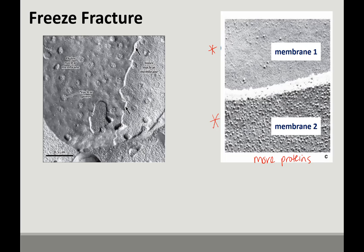Some pretty cool science has been done using freeze fracture. For example, here is the nuclear envelope — they split it and you can see these big divots, which are way bigger than the little bumps. There are also a lot of little bumps out here. These are nuclear pores, which allow for transport of proteins in and out of the nucleus as well as messenger RNA. What I want you to be able to recognize is: more proteins versus less proteins.